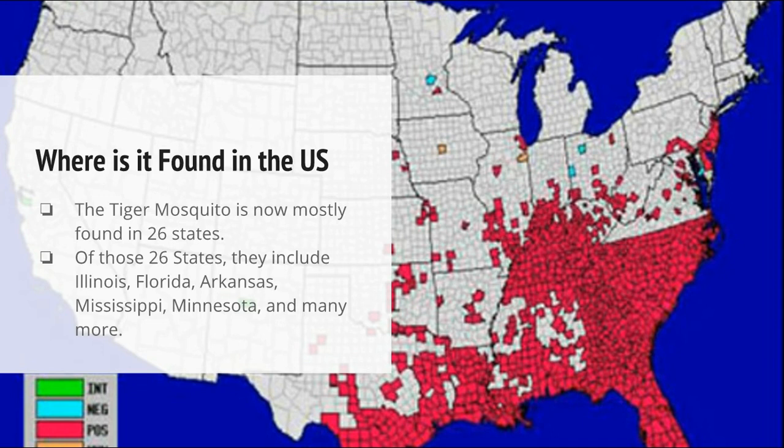As you can see, most all of the southeast — like North Carolina, South Carolina, and Florida — is filled with Tiger Mosquitoes. And when you go more north, you'll see less of them, like in Illinois or Missouri or someplace like that.